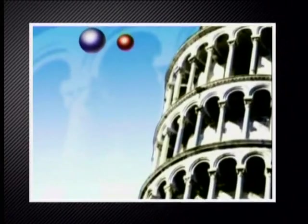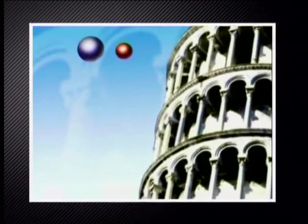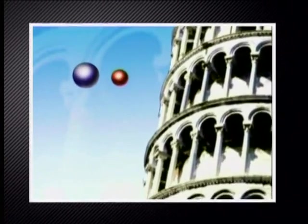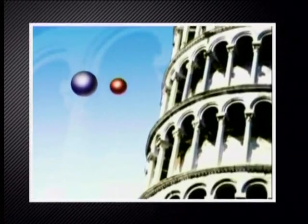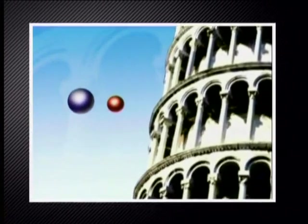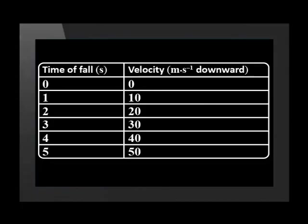Imagine we let the projectile fall freely from the top of a very high building and we measure its velocity at the end of each second of its fall. This is roughly what we would measure. Note that the projectile's velocity is downwards for this whole motion.